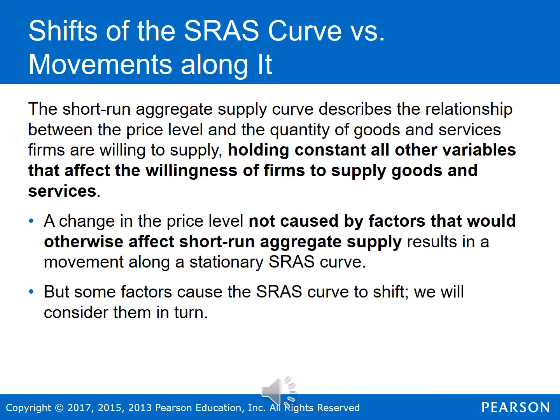Just like we talked about with the aggregate demand curve, we have to deal with the difference between movements along the short-run aggregate supply curve and a shift in the short-run aggregate supply curve. The short-run aggregate supply curve describes the relationship between the price level and the quantity of goods and services that firms are willing to supply in the entire macroeconomy, holding constant all variables that affect the willingness of firms to supply goods and services. A change in the price level results in movements along a stationary short-run aggregate supply curve, but there are some factors that cause the curve itself to shift, and we're going to consider them over the next couple of slides.